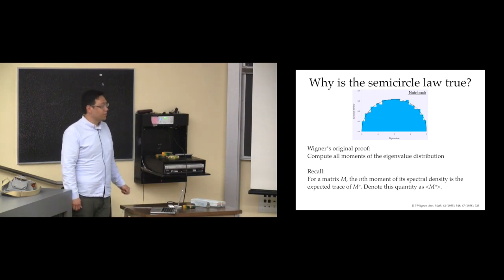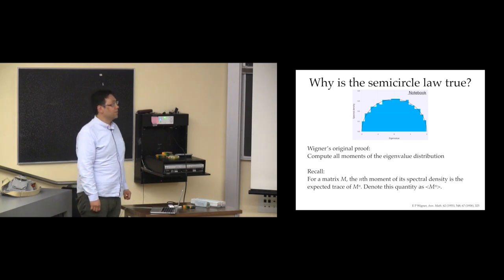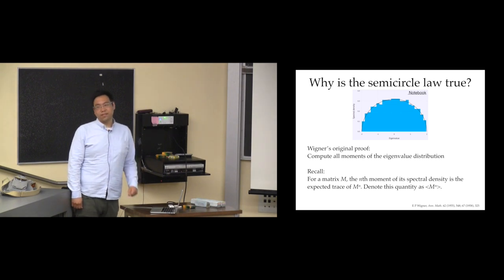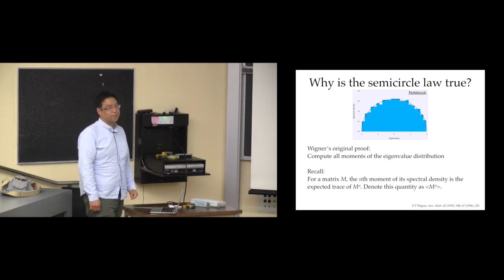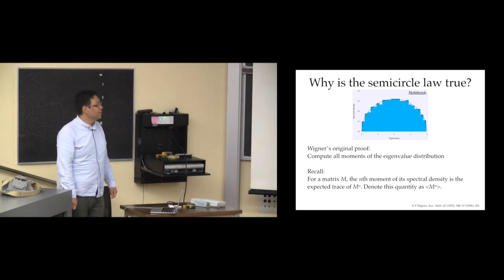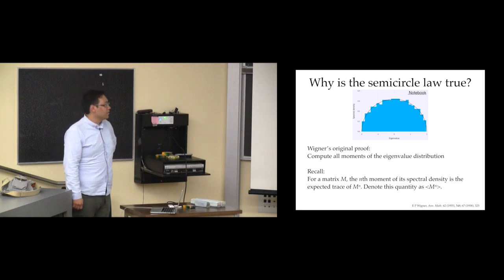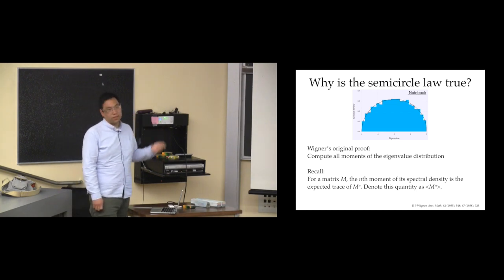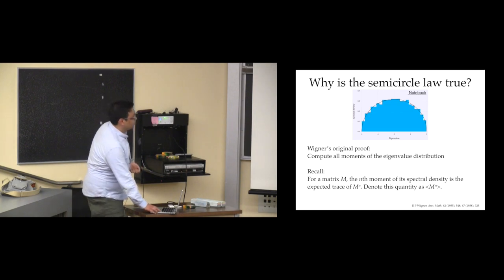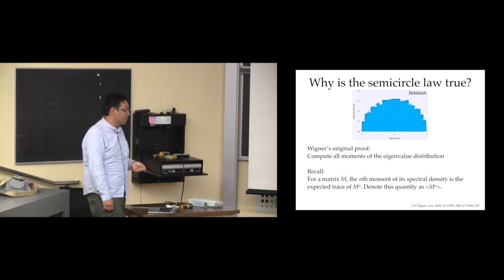So why is the semicircle law true? I figured if I'm presenting to mathematicians, maybe I should try to present a proof — though this is a rather hairy proof, so I'll skip most of the details. How do you start from a bunch of Gaussians and get a semicircle? Wigner's original proof was to do this by brute force: compute the moments of the eigenvalue distribution. There is a notion of what the moment of a matrix is — you take the nth power and the expectation of its trace. This angle bracket notation for the expectation of M to the n is standard in physics.